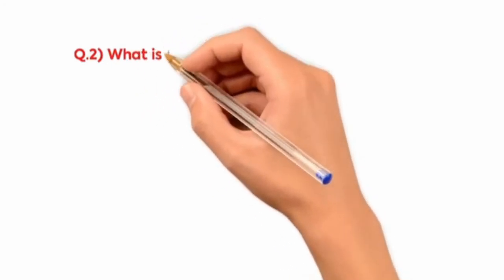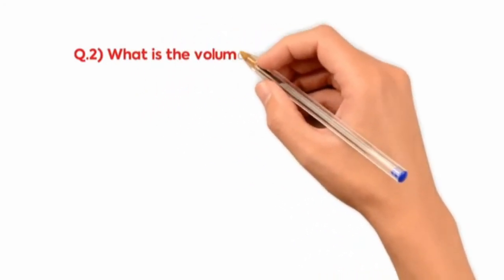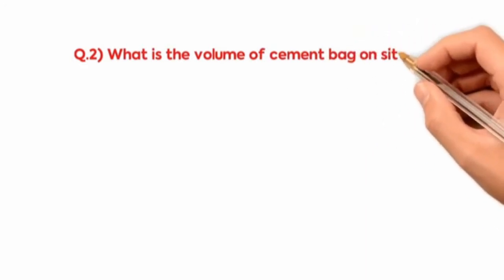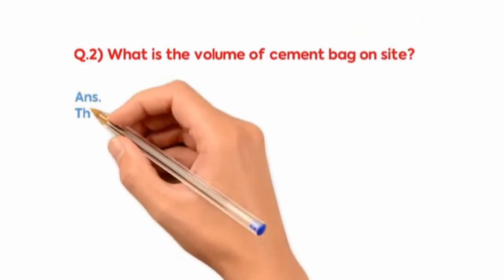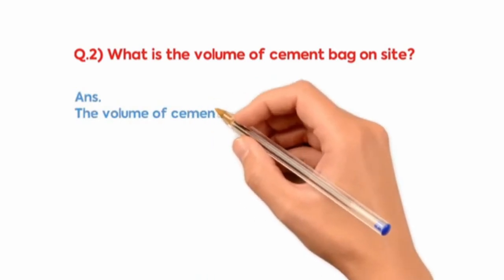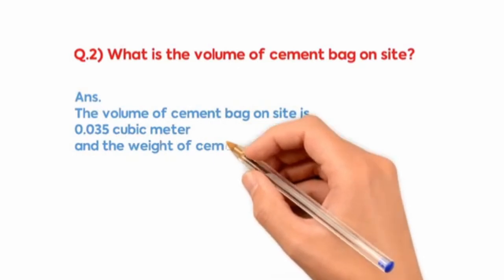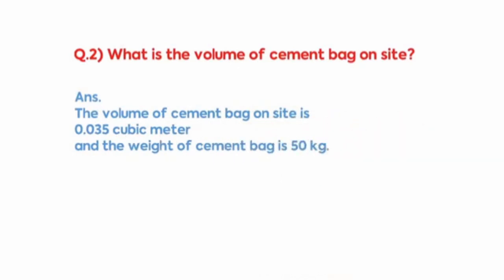What is the volume of cement bag on site? The volume of cement bag on site is 0.035 cubic meter and the weight of cement bag is 50 kg.